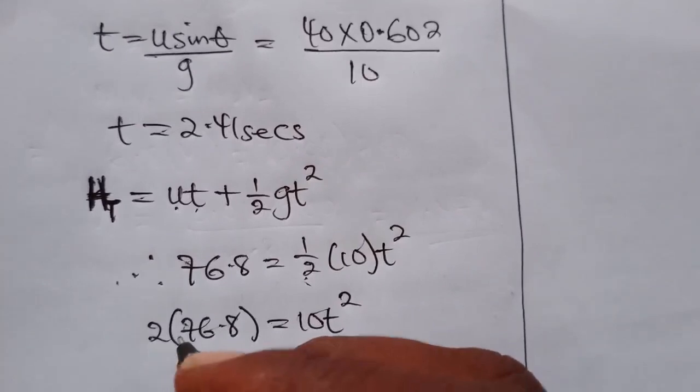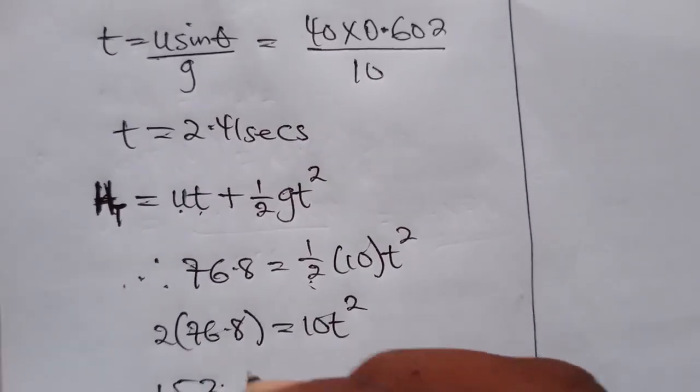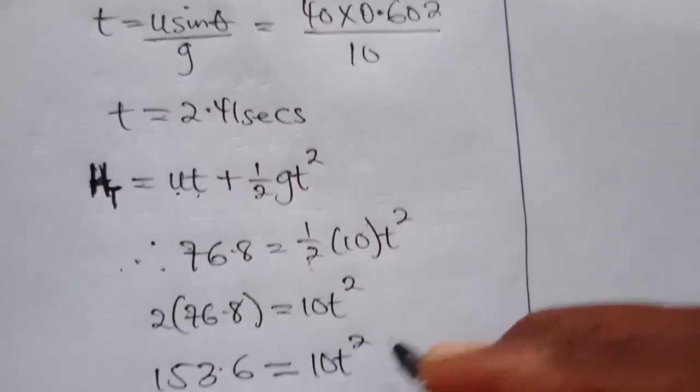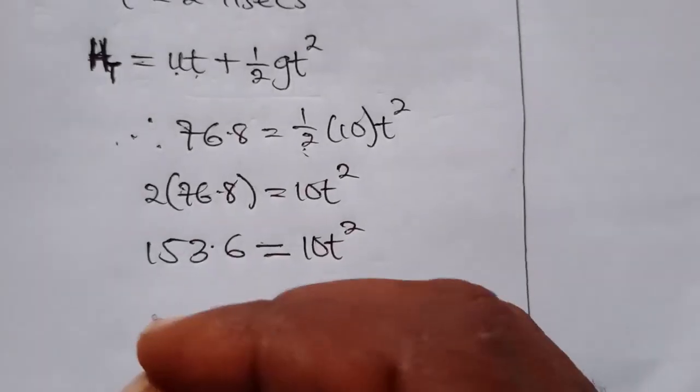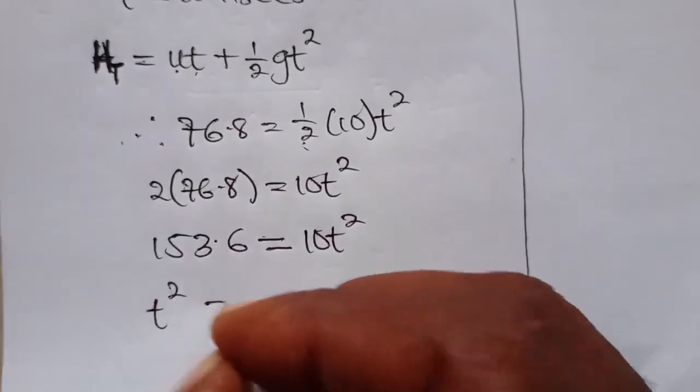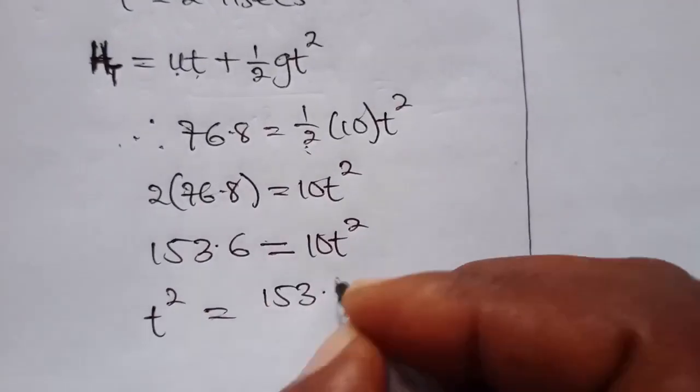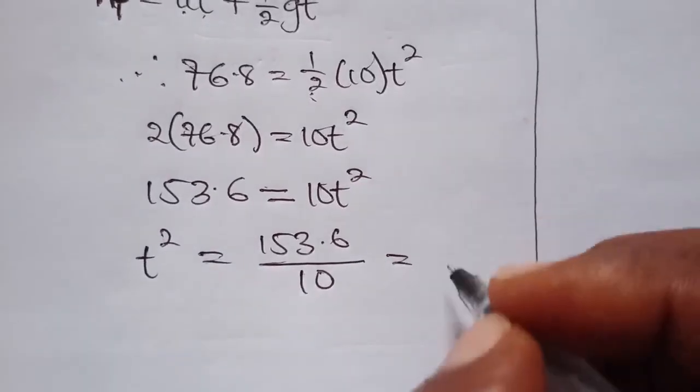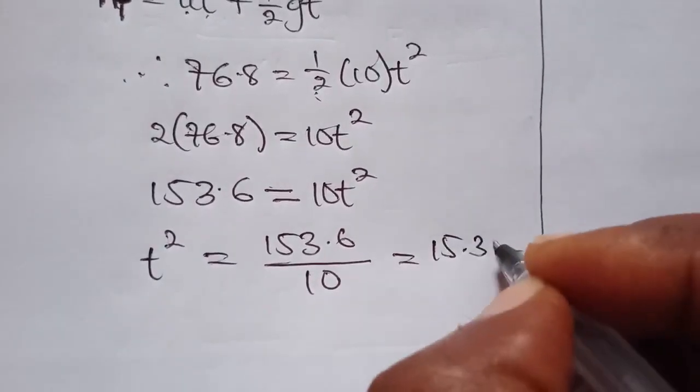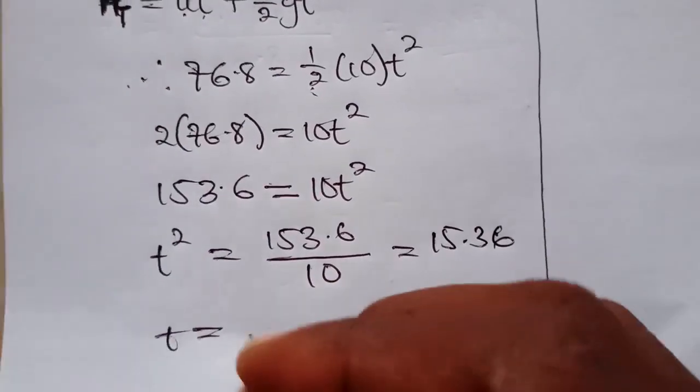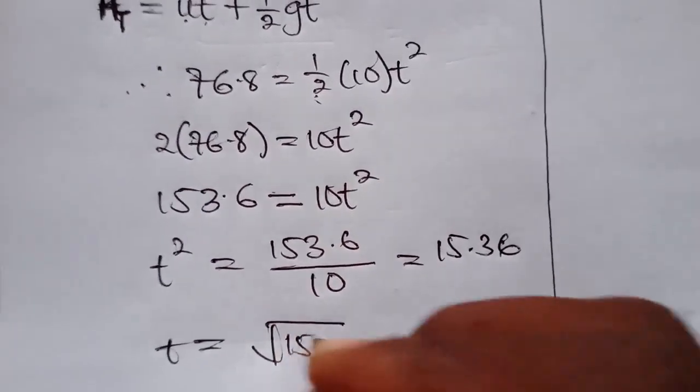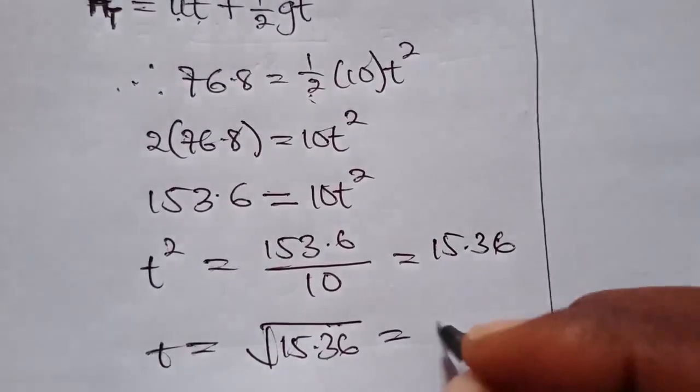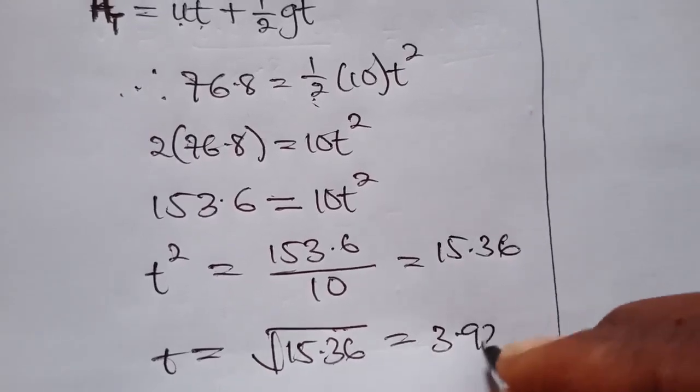So t squared becomes 153.6 over 10. Dividing by 10, we have 15.36, so our t becomes the square root of 15.36, which equals about 3.92 seconds.